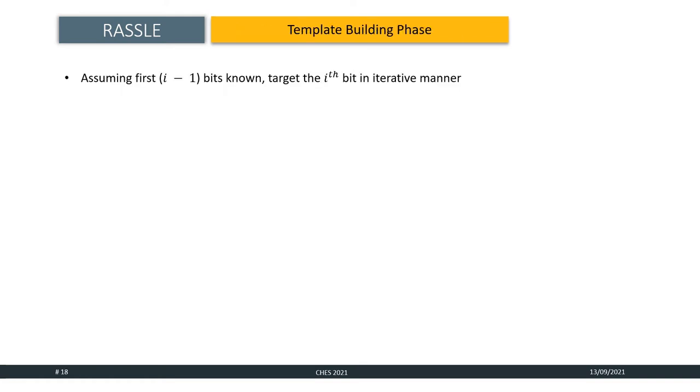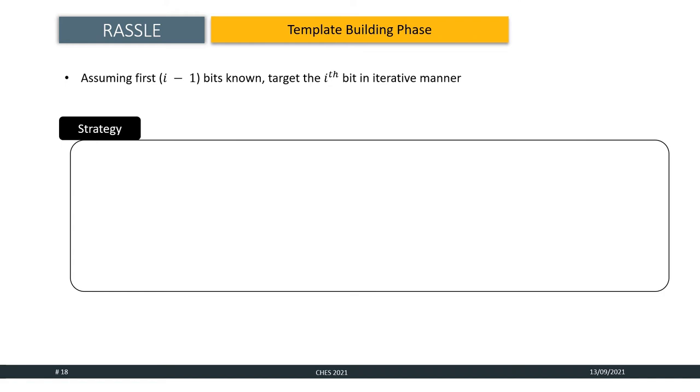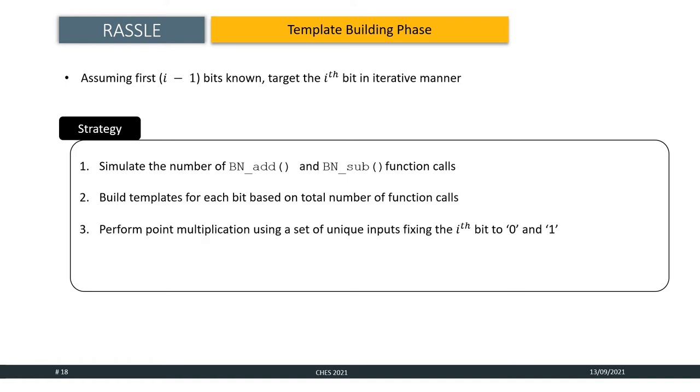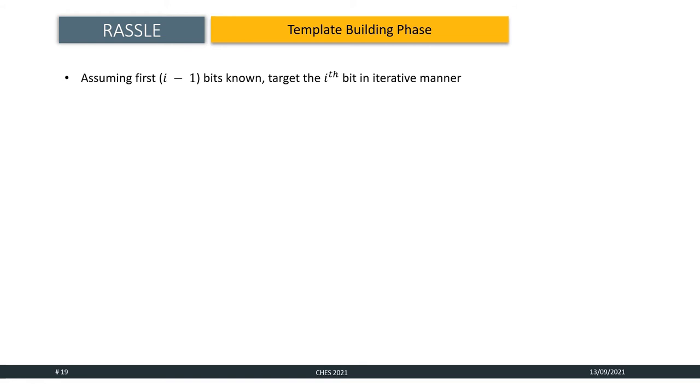We perform the attack in an iterative manner. At a particular instance, the adversary targets the ith bit of the secret scalar given the assumption that the adversary already knows the first i-1 bits. The template attack works in two phases, template building and template matching. During the template building phase, the attacker simulates the number of bn_add and bn_sub function calls for each bit. As the number of bn_add and bn_sub function calls depend on the particular bit being processed and the affine coordinate of the curve points, the attacker builds templates for each bit based on the total number of these function calls executed for a fixed set of input plaintext. For any particular bit, say the ith bit, the attacker performs point multiplication using a set of unique inputs, fixing the ith bit to be both 0 and 1. Next, on each input, the attacker estimates the total number of addition and subtraction function calls made by the ECC program. For the ith bit, assuming it is valued to be both 0 and 1 and simultaneously it uses a spy process to measure the execution time using RASL.